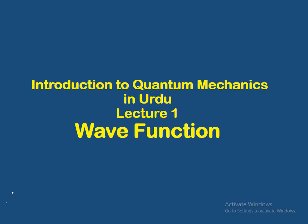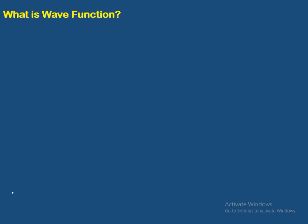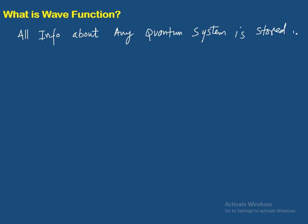This is our first video on quantum mechanics, in which I will be discussing what is wave function and what are the properties of a valid wave function. Wave function kya hai? Physically, all information about any quantum system is stored in what is called the wave function. All information about a quantum system is stored in a mathematical expression called the wave function.